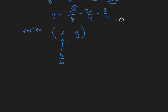I'm going to calculate negative b over 2a in this problem. Remember, a is the number next to x squared, so in this case it's negative 1/8. b is the number next to the x that's not squared, so it's negative 3/8. So I've got negative negative 3/8 — because the formula says negative b — over 2 times a, which is 2 times negative 1/8. So this represents negative b over 2a.